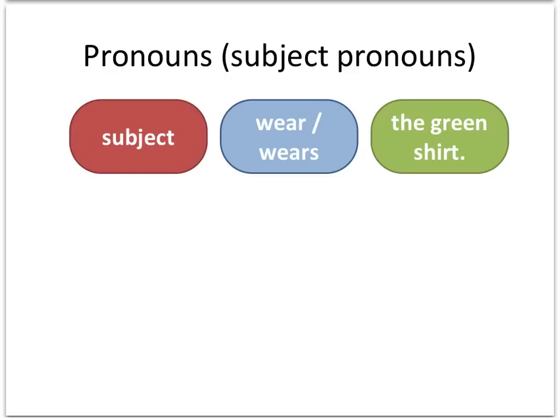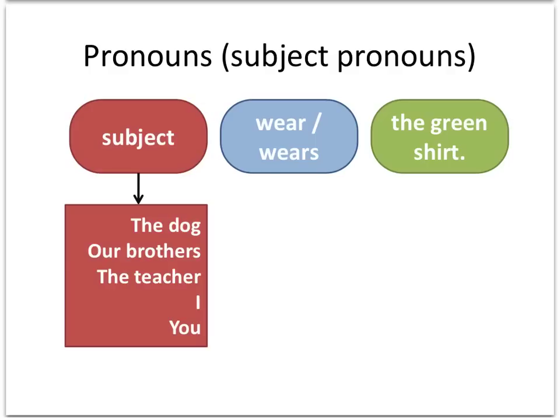Right now we don't have a complete sentence — the subject is left out, but we do have a verb, 'wear' or 'wears' depending on whatever the subject might be, and 'the green shirt.' There are many things we could plug into this sentence. For example, we could say: the dog wears the green shirt, our brothers wear the green shirt, the teacher wears the green shirt, I wear the green shirt, you wear the green shirt — there really are a ton of options.